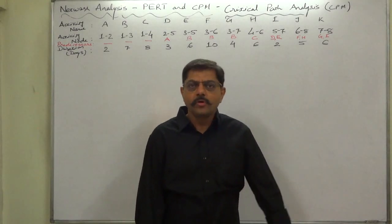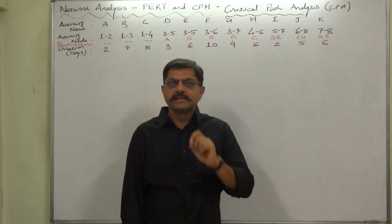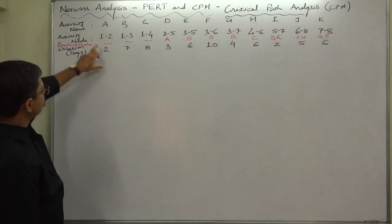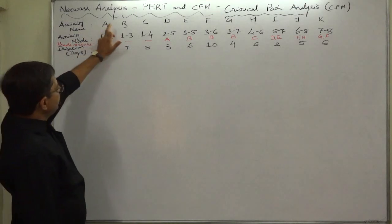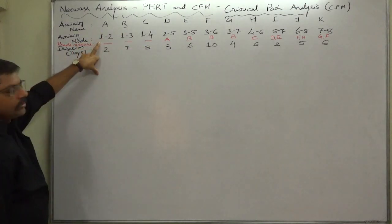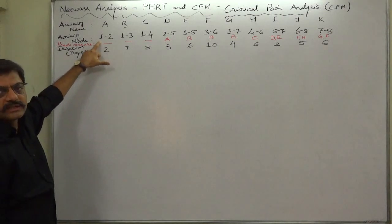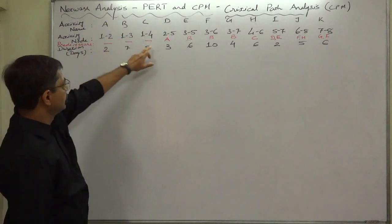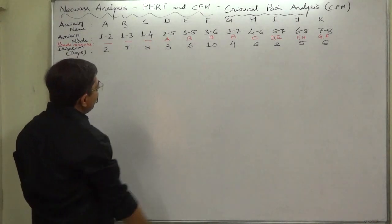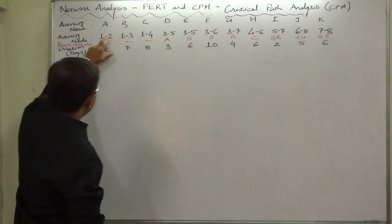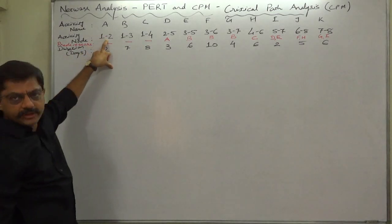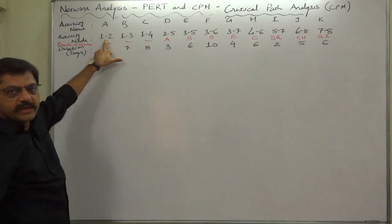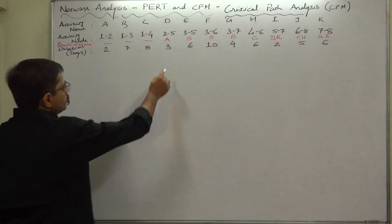How to know about predecessors from this kind of information? Activities A, B and C have start point node number one, and we know node number one is always the starting node, so A, B and C are start activities with no predecessors. D has starting point node number two, and A has node number two as end point - that means A is predecessor of D.